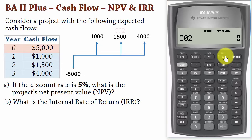Next, for year 2, 1500. Enter. Press the down arrow button. Press it again.